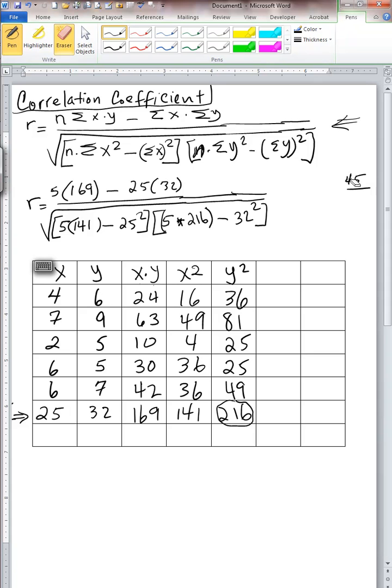Let's find out what our denominator turns out to be. Under the radical sign, the first term, which relates to the x's, is 5 times 141, which is 705. And we subtract from it the 25 squared, which is 625.